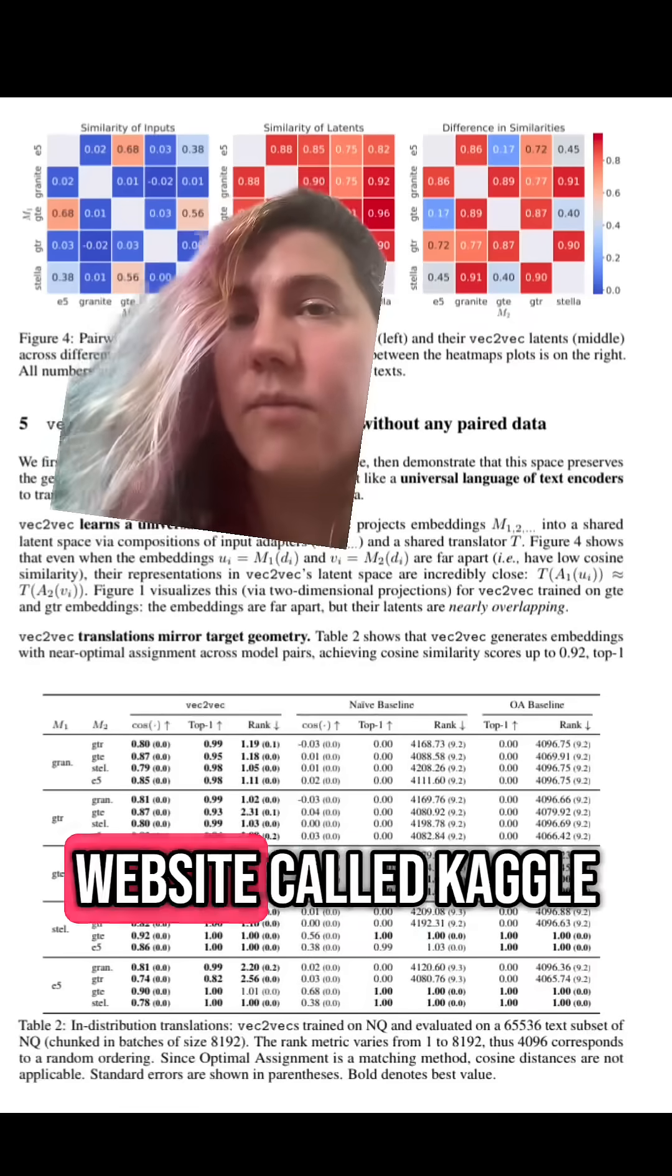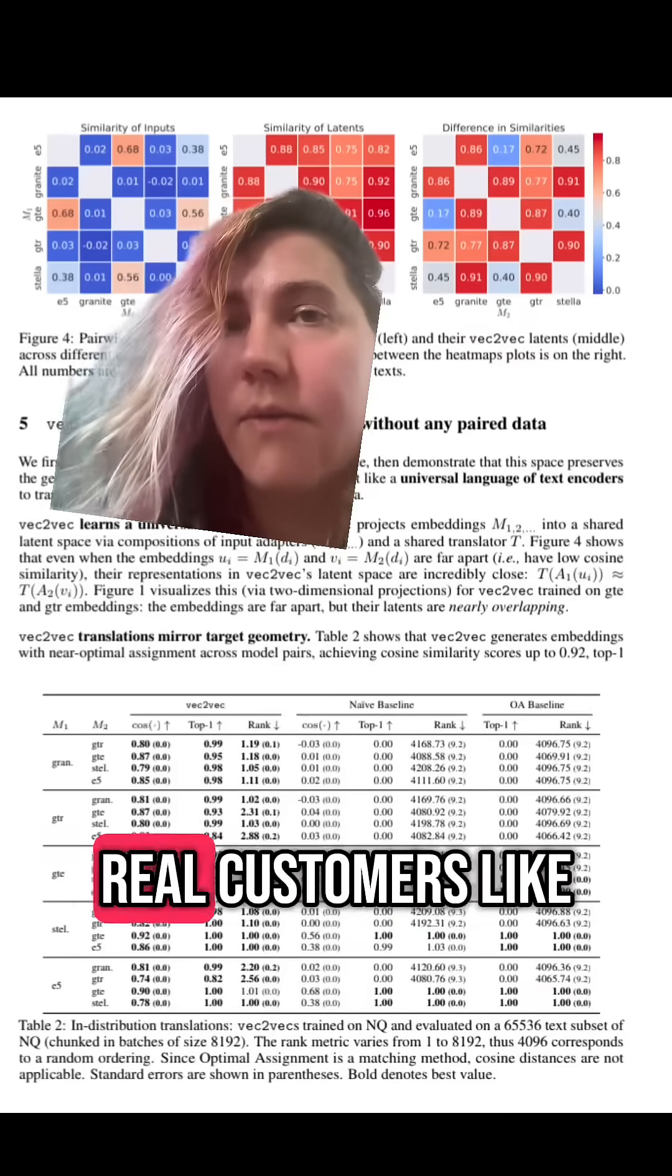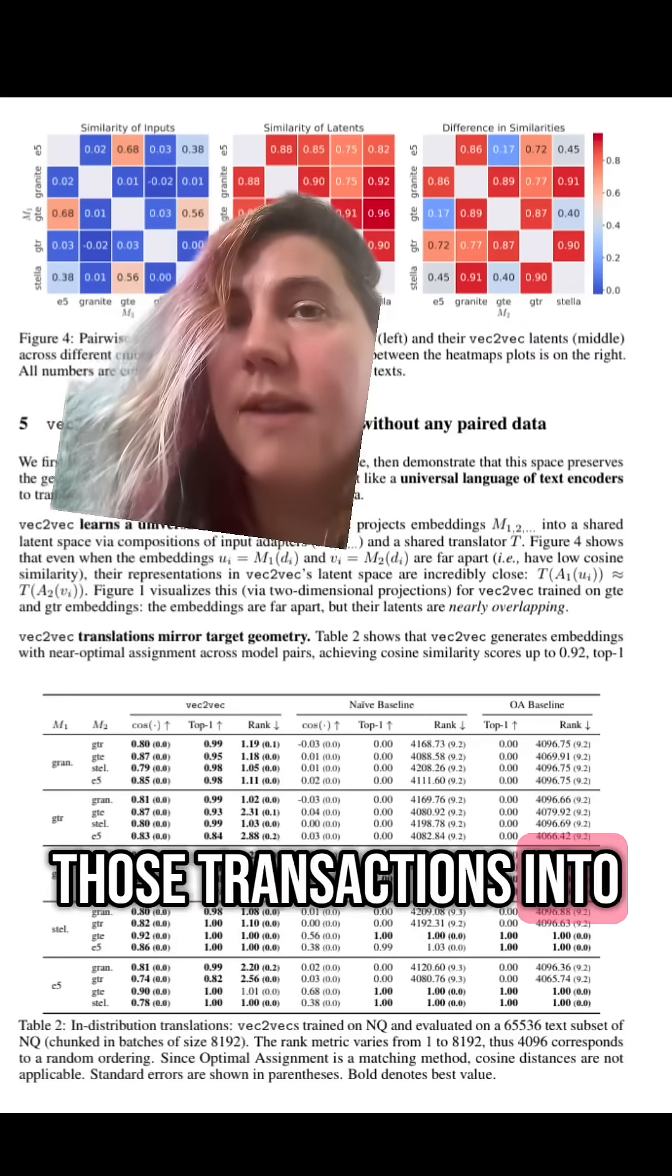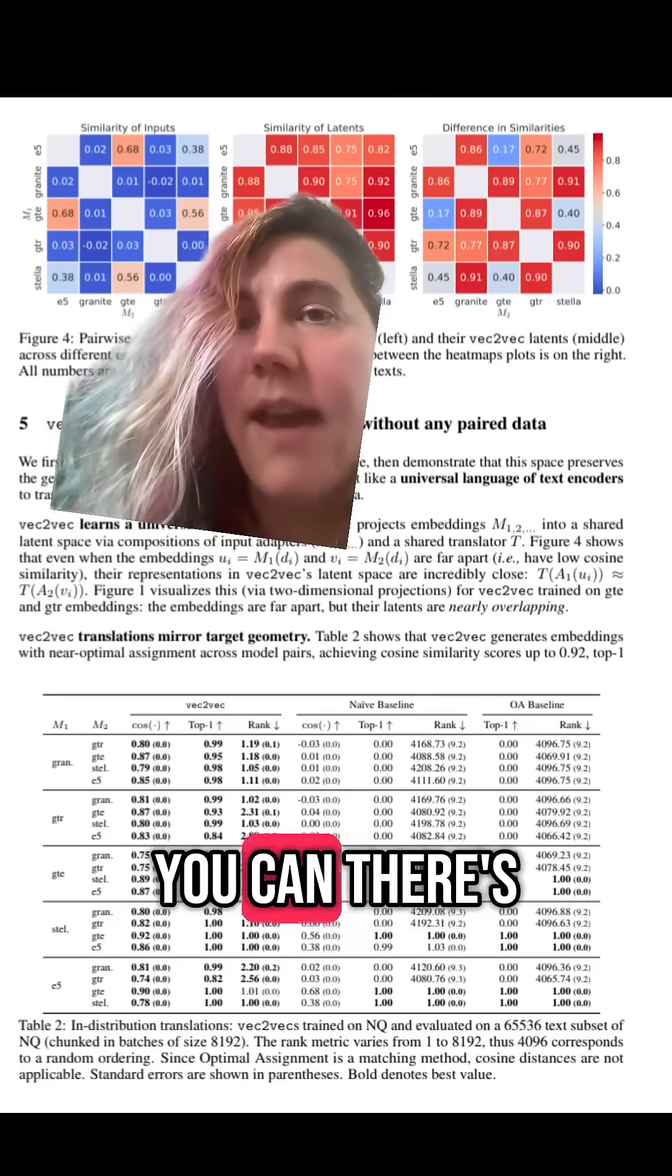When I teach AI, I use this website called Kaggle. On it, people will post real data of real customers, like credit card transactions, but they've embedded those transactions into a vector space so that you can't really de-anonymize it. Except that now you can.